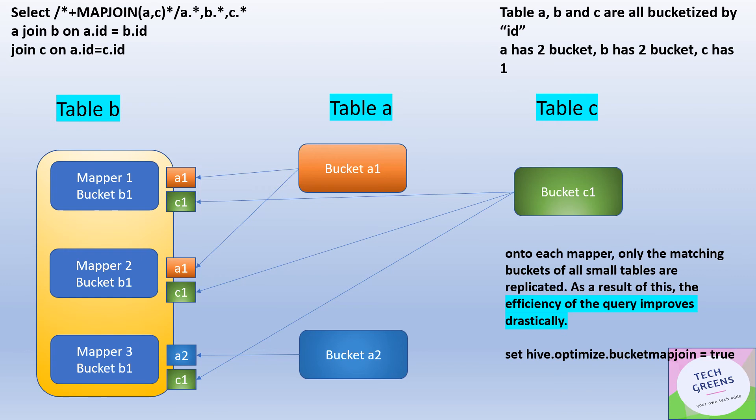So if you see here, only the required buckets are fetched into the specific mappers during the mapping stage. What happens here is onto each mapper, only the matching bucket of the smaller tables are replicated, and we do not fetch the complete table. So this saves us on the query performance.